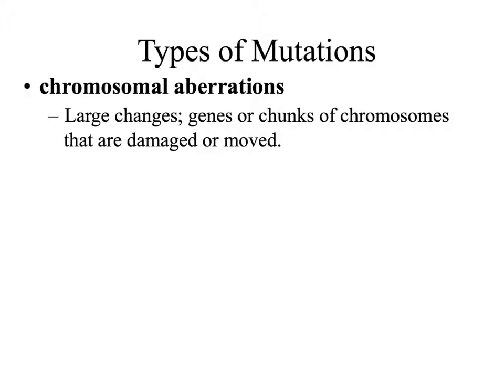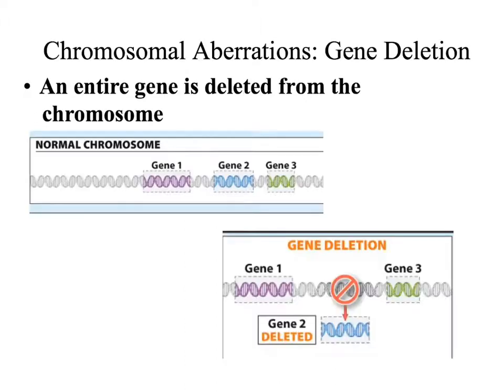Some mutations are on a larger scale than a single base. Chromosomal aberrations are large changes to a chromosome — genes or chunks of the chromosome are damaged or moved around. One type of chromosomal aberration is a gene deletion, when an entire gene gets deleted from the chromosome. This can be detrimental because it may remove an important trait or protein that the organism needs to survive.